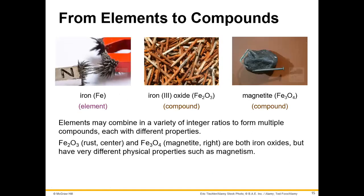Elements versus compounds — I strongly encourage you to go watch the video on Classifying Matter. Elements are all one type of atom. If you have iron — those little spiky things are iron filings stuck on a magnet — every single atom is exactly the same. Whereas in a compound, you have two or more elements that are chemically combined. For example, this is rust, iron(III) oxide. And here's another compound — a magnet.